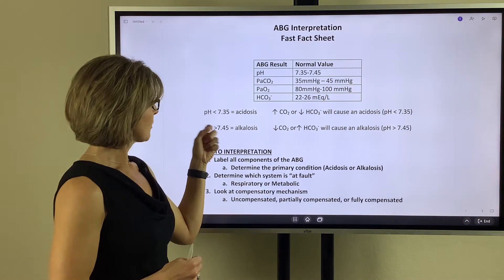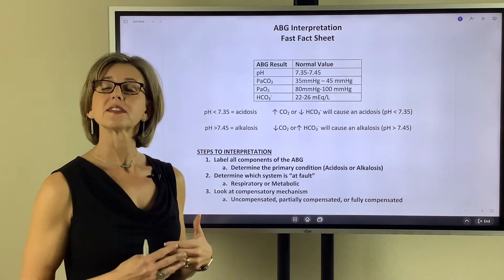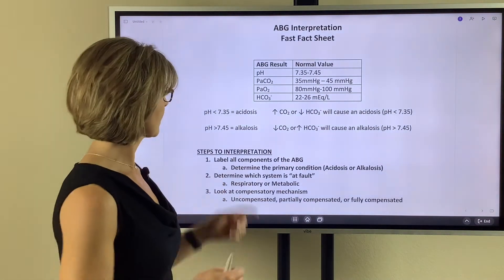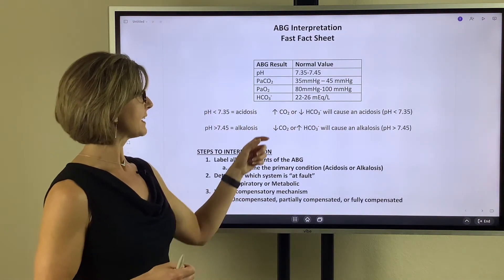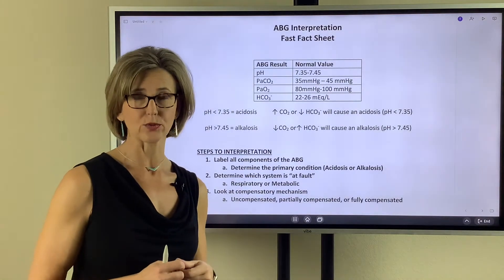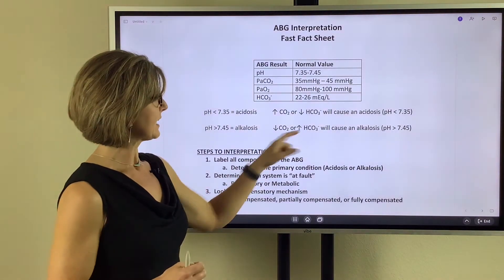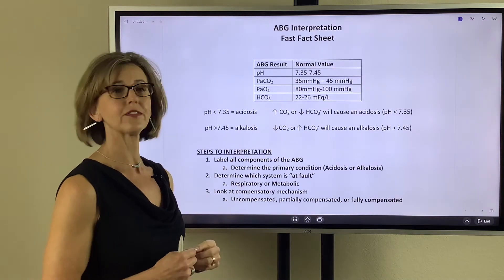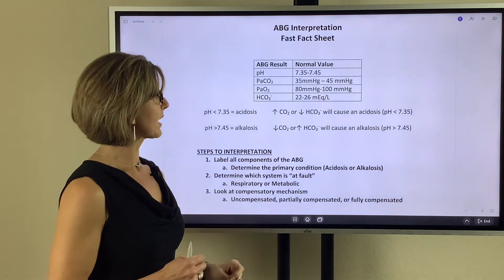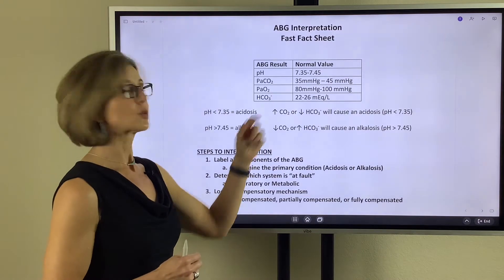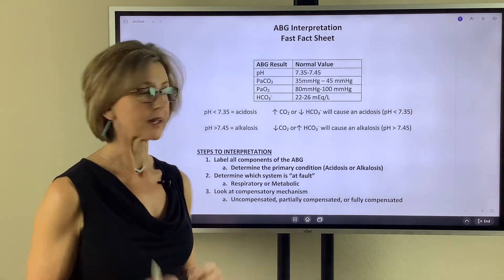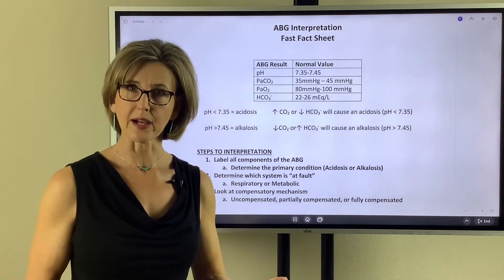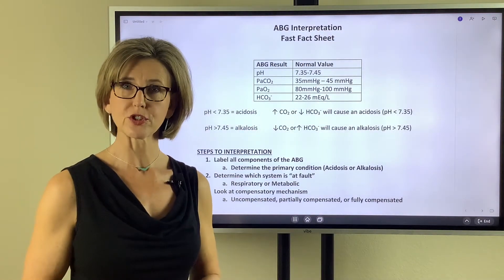A pH greater than 7.45 is an alkalosis. The two things on a blood gas that can cause an alkalotic condition are a decrease in CO2 less than 35, or an increase in bicarbonate greater than 26. You have to have this information memorized to be able to interpret an ABG.